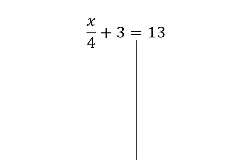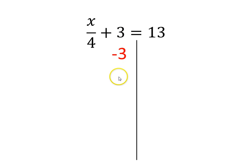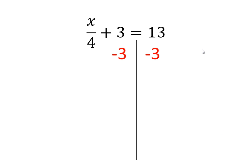Then I'm going to take this plus 3 and make it go away — I want to isolate x. X is on the same side as the divided by 4 and the plus 3. So we're going to do the order of operations backwards because we're undoing the equation. I'm going to subtract 3 on the left-hand side because the opposite of plus 3 is minus 3. And what you do to one side of the equation, you have to do to the other side, so I subtract 3 on the right-hand side as well.